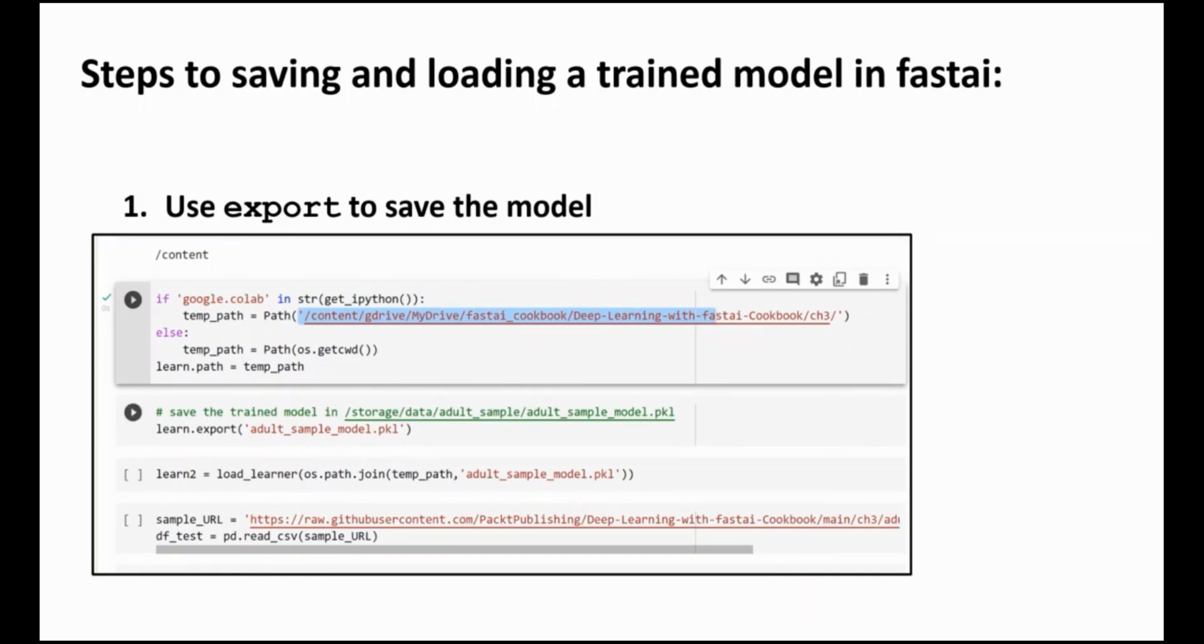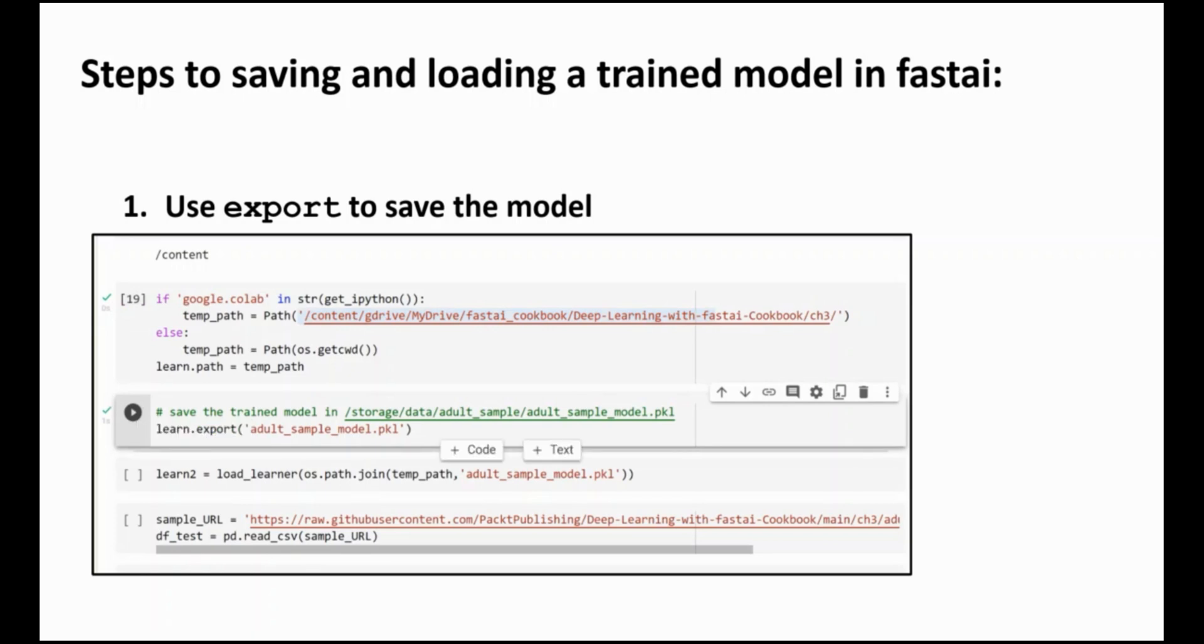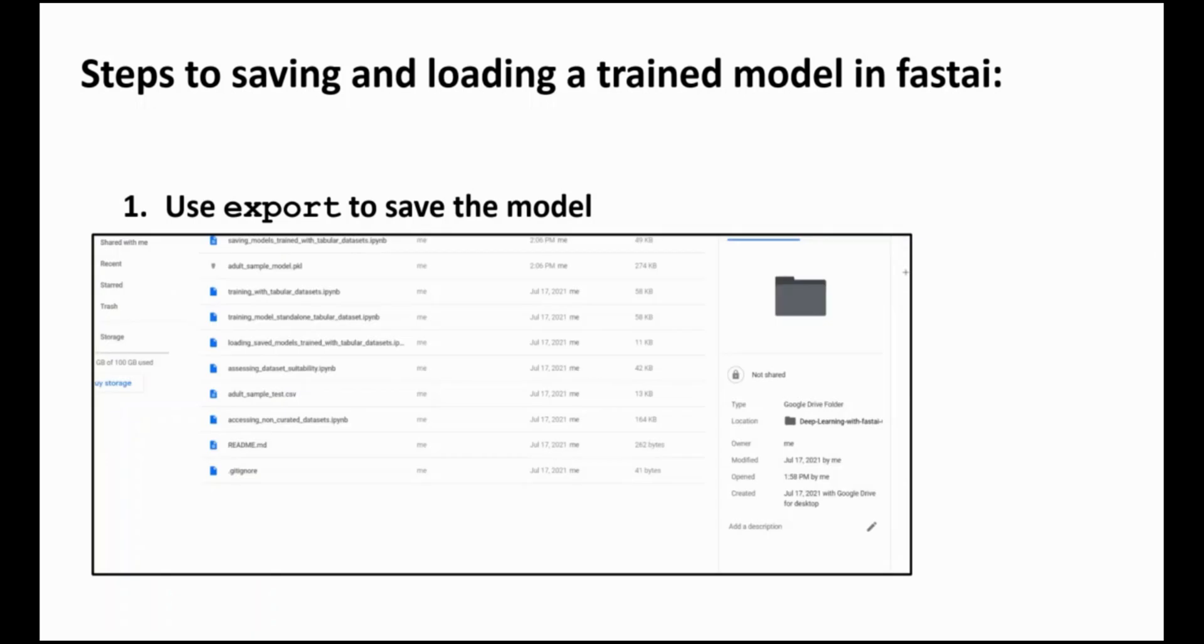Once we've set the path for the model we can use the export function with the file name we want to use for the saved model as an argument. We're running this experiment in Colab so if we look at the directory and drive where the notebook is, we see that the pickle file for the model has been saved there as expected.